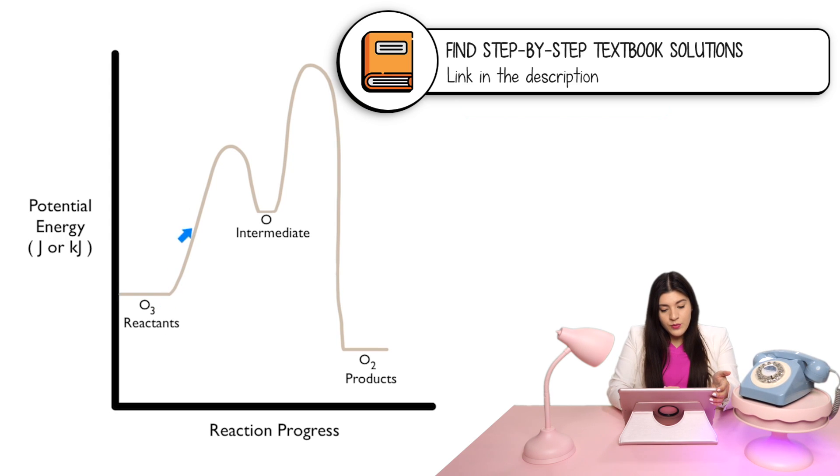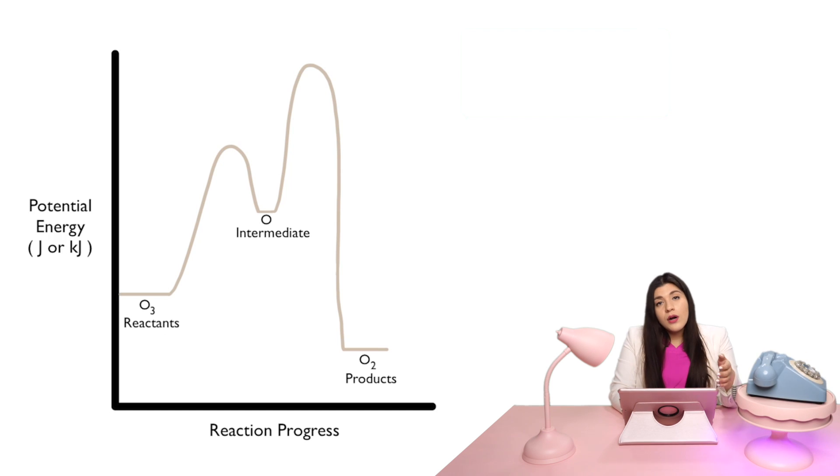In this case, we don't just have a typical one curve. Instead, here we have two different curves or two different high points, which we'll go over. These are actually known as transition states or activated complexes. Now here in the center, since we do have two distinct curves, then this is known as an intermediate. Whenever we have that kind of dip and this levels out and there's something in between, we have that intermediate.